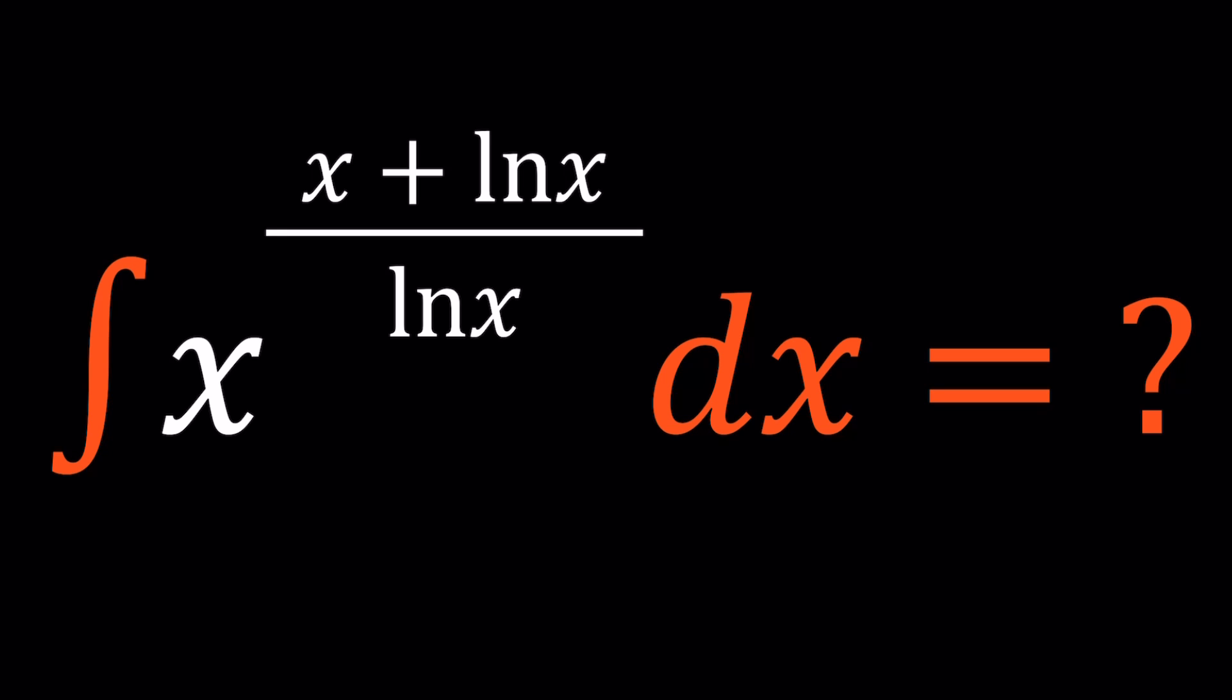Which kind of looks complicated, doesn't it look complicated? What do you think? So we have x to the power x plus ln(x) divided by ln(x), that is the exponent, dx, and how do you integrate something like this?